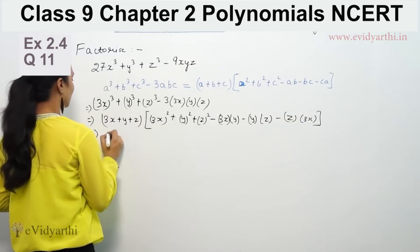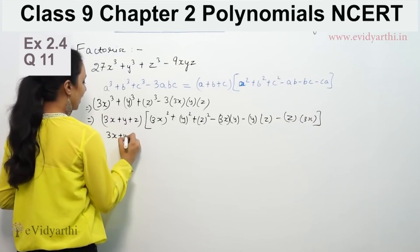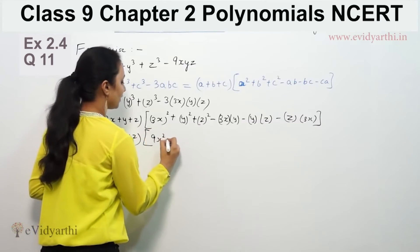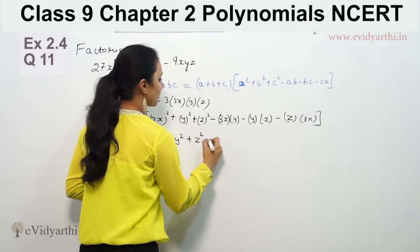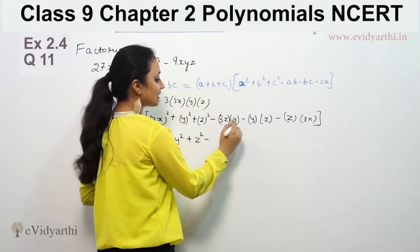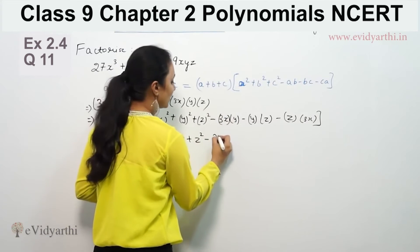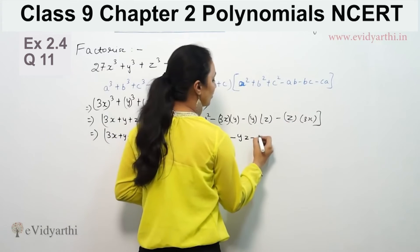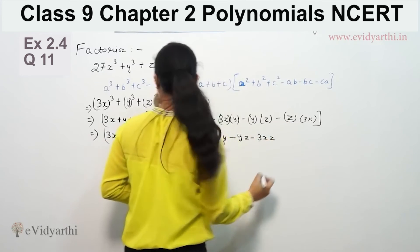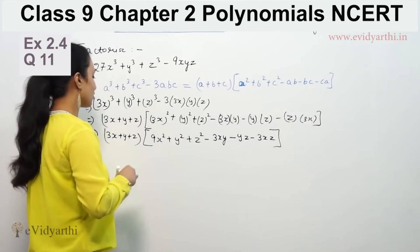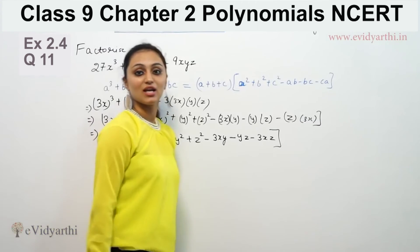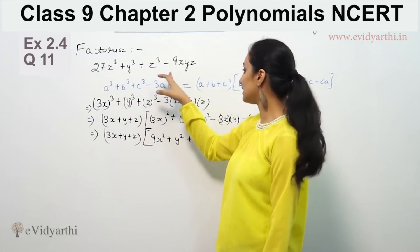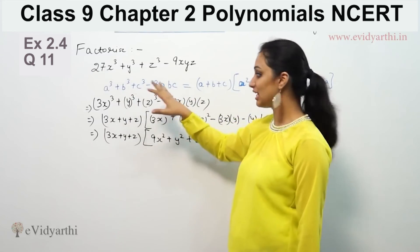So we write it as (3x + y + z) times (9x² + y² + z² - 3xy - yz - 3xz).